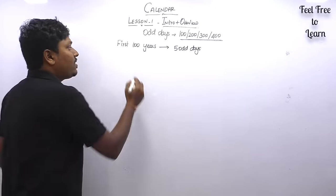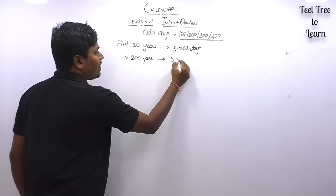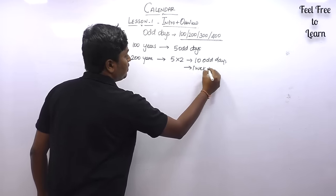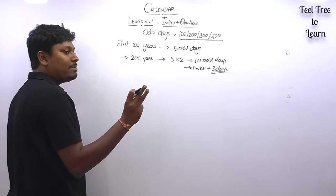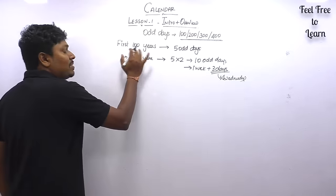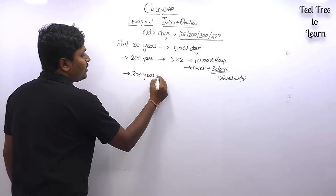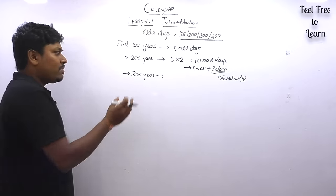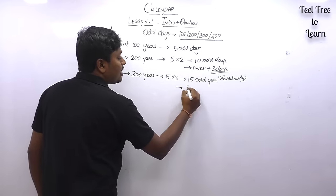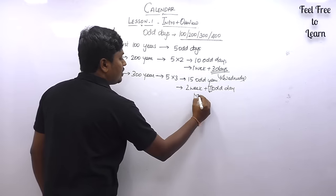For the first 200 years: the first 100 years gives 5 odd days, so multiply: 5 × 2 = 10 odd days. 10 = 1 week + 3 days → 3 odd days → Wednesday. For the first 300 years: 5 × 3 = 15 odd days. 15 = 2 weeks + 1 odd day → Monday.